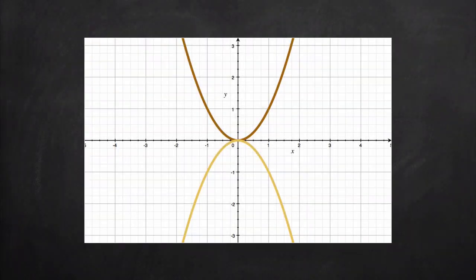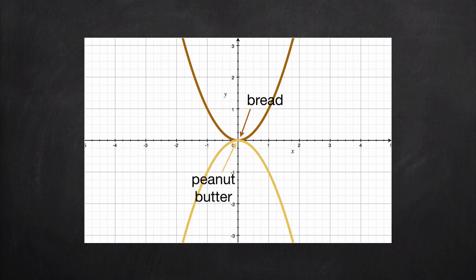It's called the sandwich theorem because it's about taking the jelly and smashing it in between the bread and the peanut butter. See, all the sandwich theorem actually tells us is that if the bread is at zero right here and the peanut butter is also at zero right here, if we know that the jelly has to go in between them, then we know that the jelly must also be zero right here.